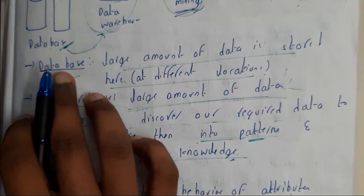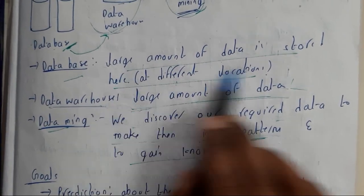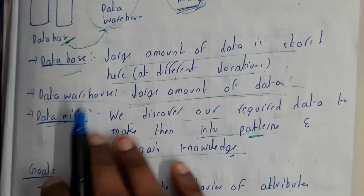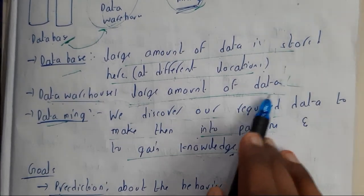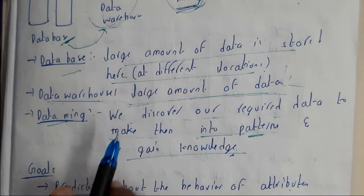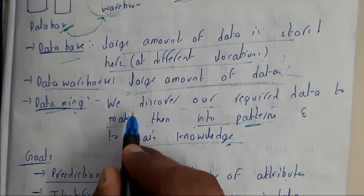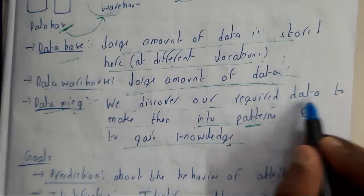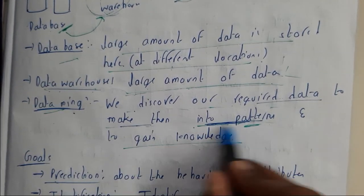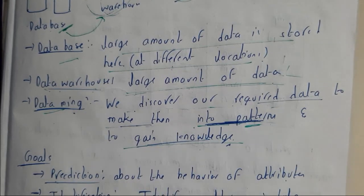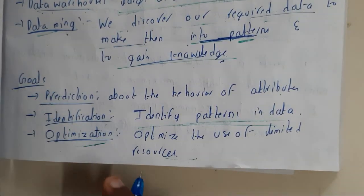Let us go through one-line introductions. A database is where a large amount of data is stored, possibly at different locations. A data warehouse is where a large amount of data is stored centrally. Data mining is the process of discovering data from the warehouse, converting it into certain patterns, and gaining knowledge from it.